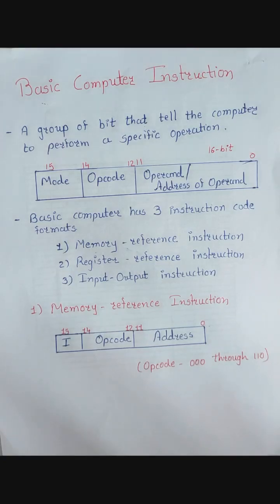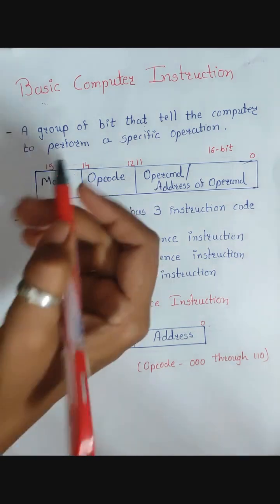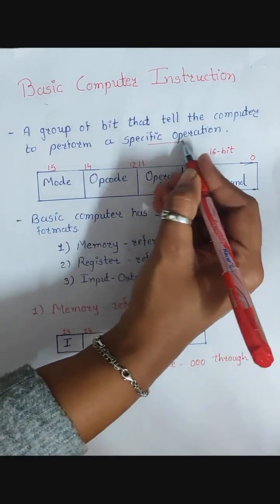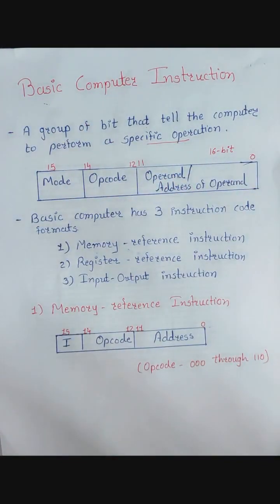Hello everyone. In this video lecture we are going to study about basic computer instructions. But before that, let us recall what is an instruction. An instruction is nothing but a group of bits that tells the computer to perform a specific operation. That means we are giving a command to the processor, or CPU, to perform a specific task — that is known as an instruction. Now let us see the instruction format.